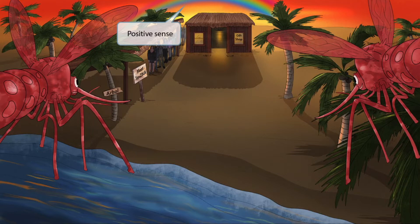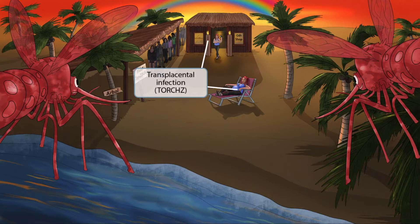Now look at this tourist resting on the beach as the sun sets. You can see from her large belly that she is definitely pregnant — she's likely trying to squeeze in one last vacation before she delivers her baby. This pregnant woman represents the fact that Zika can be transmitted through the placenta, causing an infection of the fetus. Also look at those two torches at the gift shop. TORCHZ is an acronym used to describe infections that can cross the placenta and lead to serious illness or deformity of the fetus.